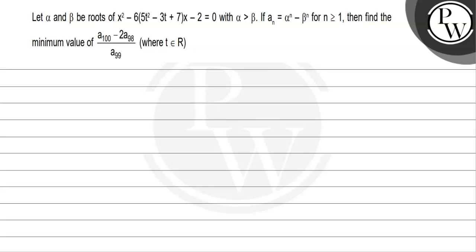Hello! Let's read the question. The question says: let alpha and beta be roots of x squared minus 6 times (5t squared minus 3t plus 7) times x minus 2 equal to 0, with alpha greater than beta. If a_n equals alpha to the power n minus beta to the power n for n greater than or equal to 1, then find the minimum value of (a100 minus 2*a98) divided by a99, where t belongs to the real numbers.